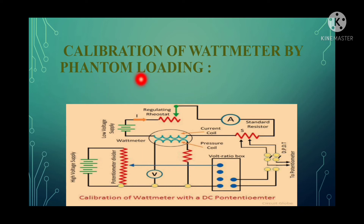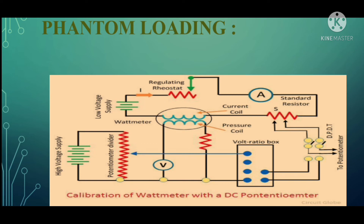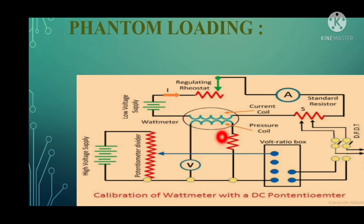Phantom loading is nothing but virtual loading. In the phantom loading arrangement, we provide a virtual load so that the power consumption is reduced and the loading effect is reduced. Since the current coil has a low value of resistance, we connect a separate low voltage source to supply the current coil. An adjustable rheostat and a standard resistor are connected to the current coil side. On the pressure coil side, we connect a high voltage supply, because the pressure coil always has a higher value of resistance.